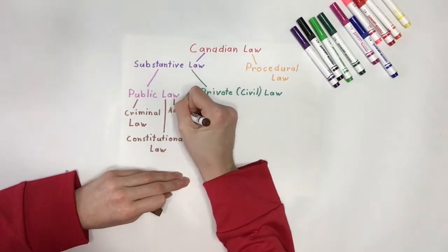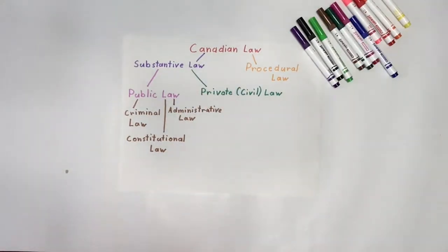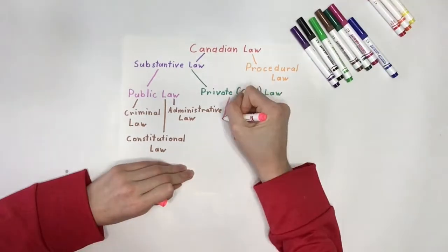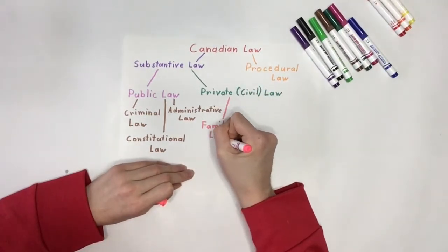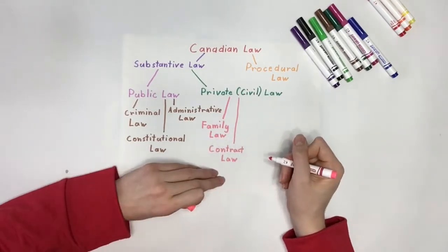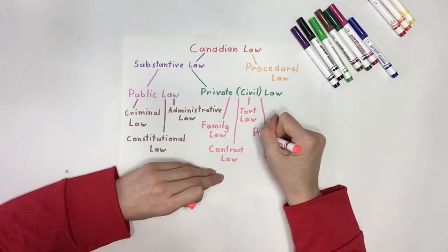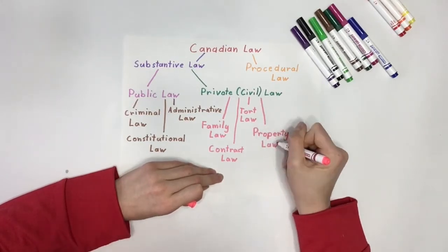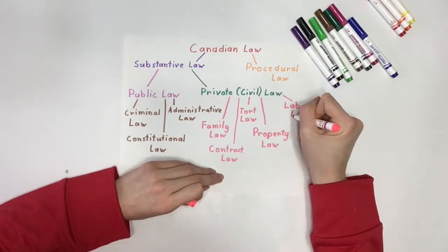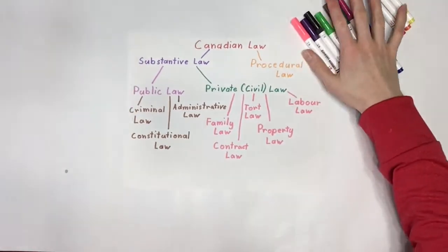On the other hand, private law outlines the legal relationships between citizens or citizens and private organizations. It is subdivided into family law, which involves individuals who live together; contract law, which governs the requirements for legally binding agreements; tort law, which outlines wrongs one person commits against another; property law, which governs the use, enjoyment, and rental of property; and finally, labor law, which deals with relationships among employees and employers.